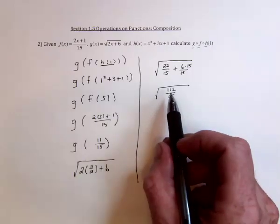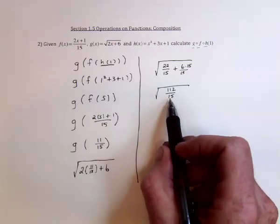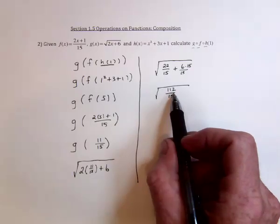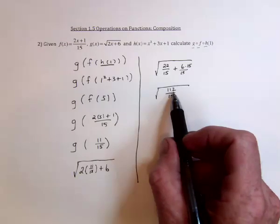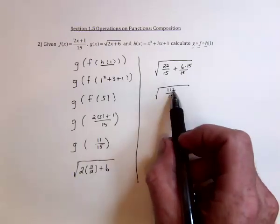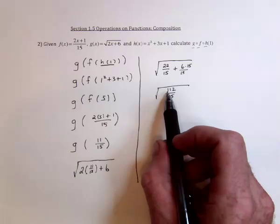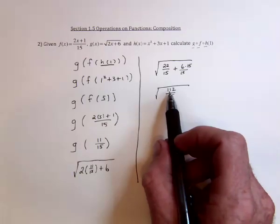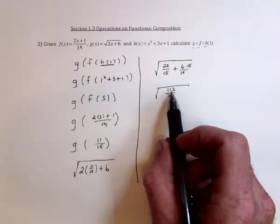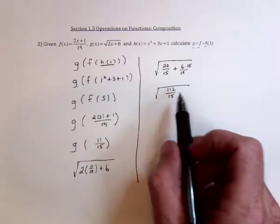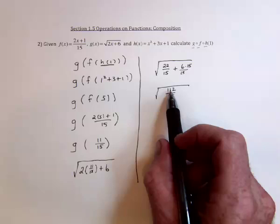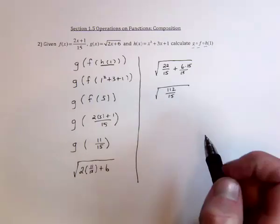Can we reduce? Well, 15 can be divided by either 3 or 5. That doesn't end in a 5, so I know I can't divide 5 into 112. The divisibility rule for 3 is to take the digits 1, 1, and 2, add them up, which would be 4. And if that's a number divisible by 3, then 112 is divisible by 3. But 4 is not divisible by 3, so we cannot reduce.